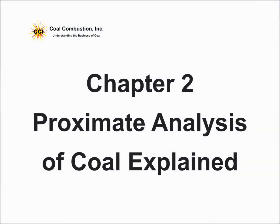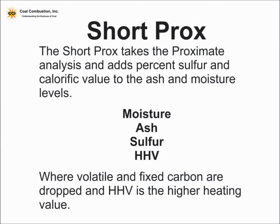We're still on the proximate analysis, but today's discussion covers the short prox, which includes the sulfur and the heating value. We've dropped out the volatile and the fixed carbon, and we're looking at moisture and ash — the dilutants — and the sulfur and the heating value, or the higher heating value, HHV.